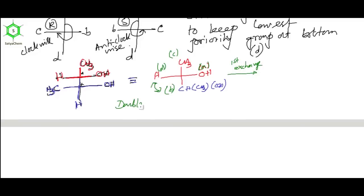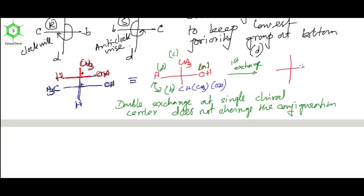Now we're doing double exchange. It's very important that double exchange at a single chiral center doesn't change the configuration. After first exchange between B and D, we have this configuration. Then we do another exchange - a second exchange. Now A-B-C is anticlockwise, so it's S configuration.